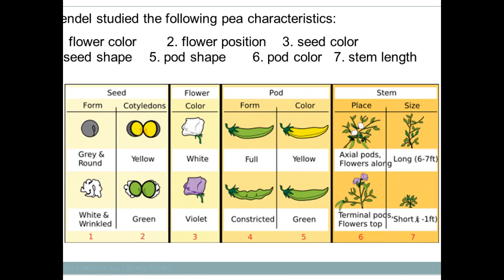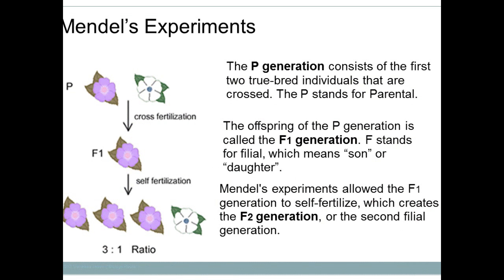Next, because the male and female parts are contained within the same flower, it was easy to self-pollinate that purple F1 flower. When he did, he got the F2 generation — and he observed three purple flowers and one white flower, a 3:1 ratio. After looking at all of these generations — the P, F1, and F2 — he figured out that a clear pattern existed.